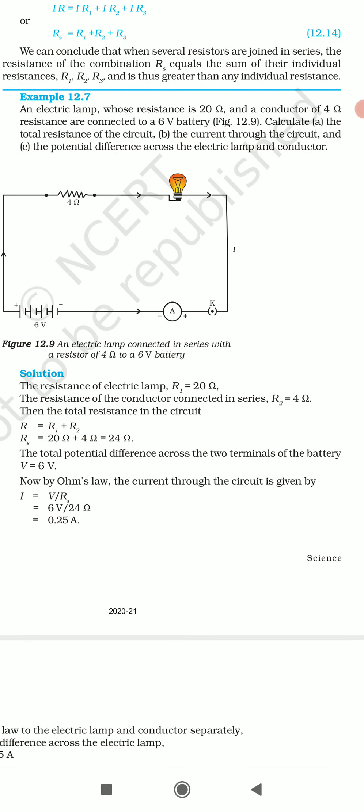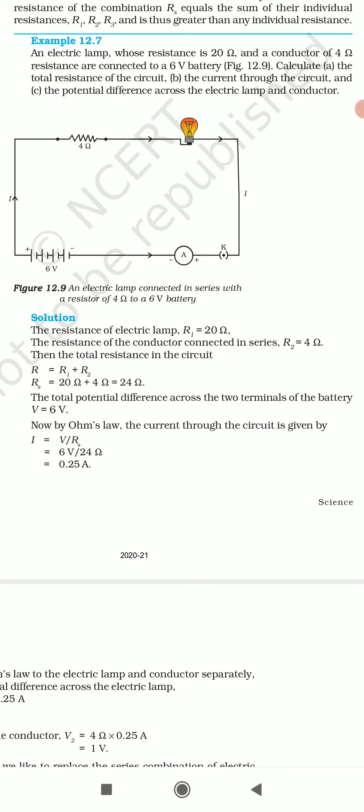Example 12.7: An electric lamp whose resistance is 20 ohm and a conductor of 4 ohm resistance are connected to a 6 volt battery. Uska resistance 20 ohm hai, aur conductor jo hai wo 4 ohm resistance ka hai. Yeh series combination mein hai, to total R = R1 + R2 = 4 ohm + 20 ohm = 24 ohm.